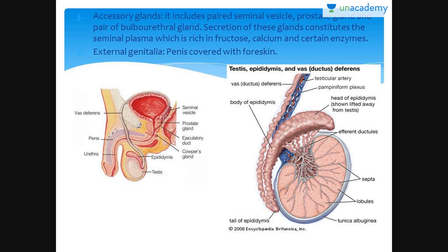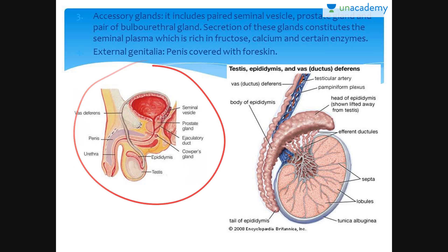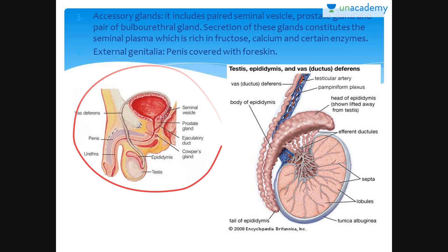Accessory glands include paired seminal vesicle, prostate gland, and bulbourethral gland. The secretions of these glands constitute the seminal plasma, which is rich in fructose, calcium, and certain enzymes. External genitalia is the penis, which is covered with foreskin. If you can have a look, this is how a male reproductive system looks like.